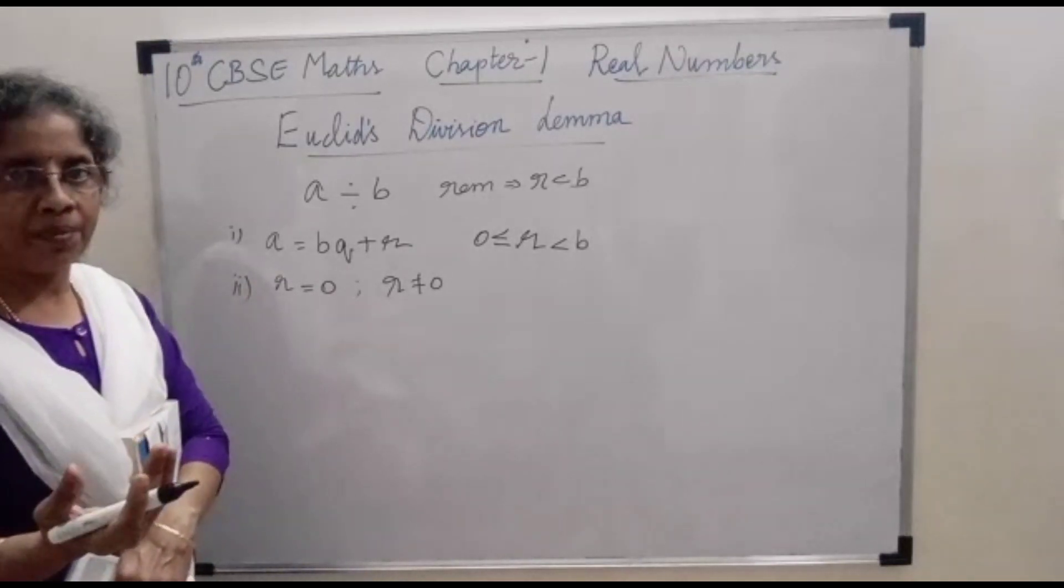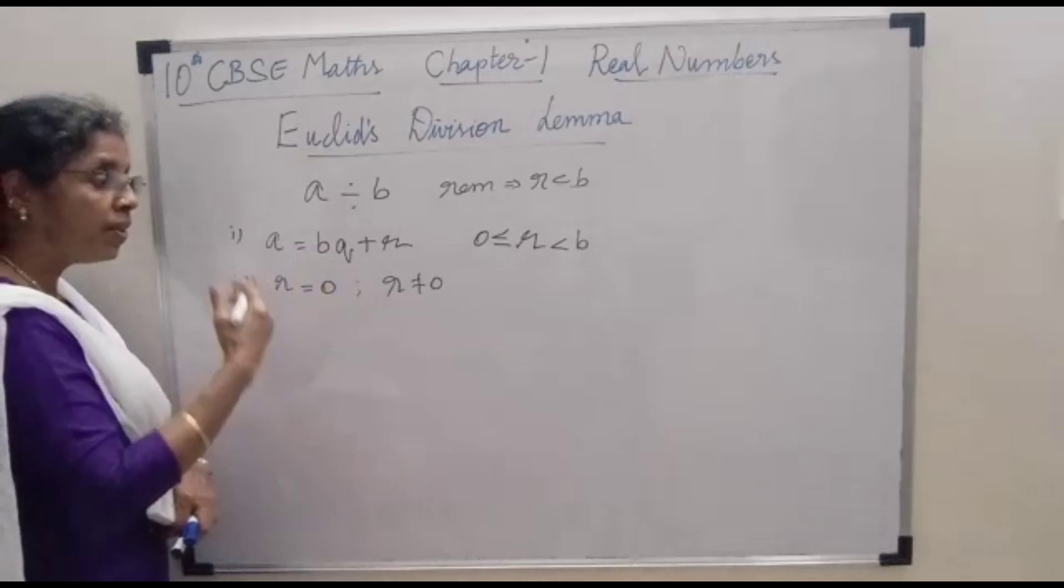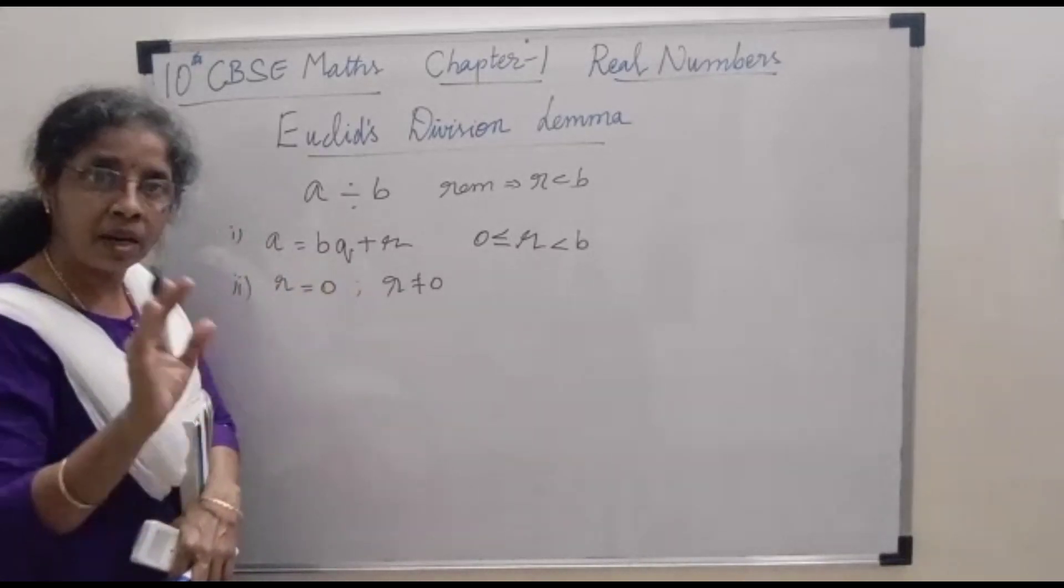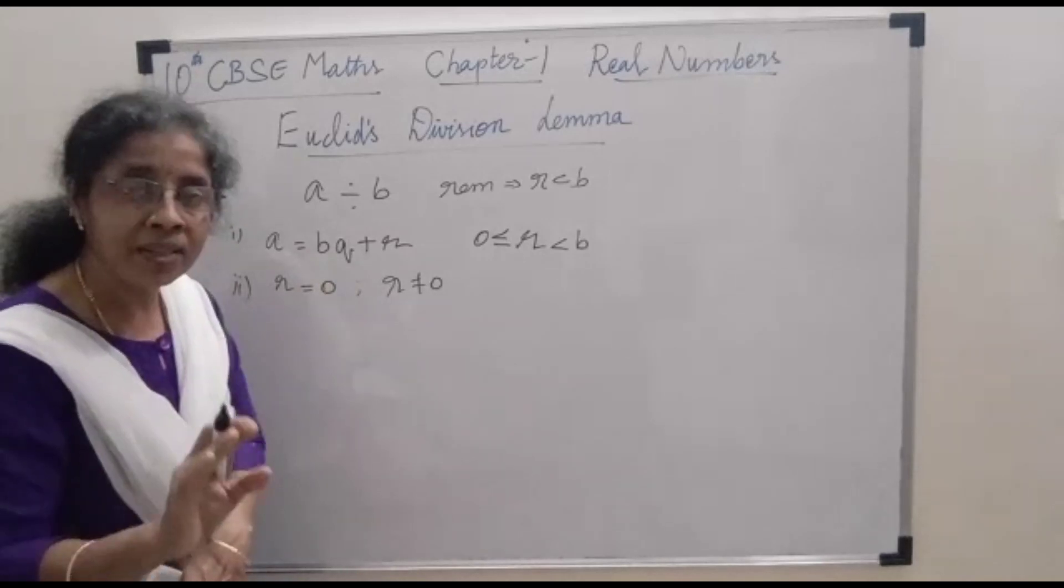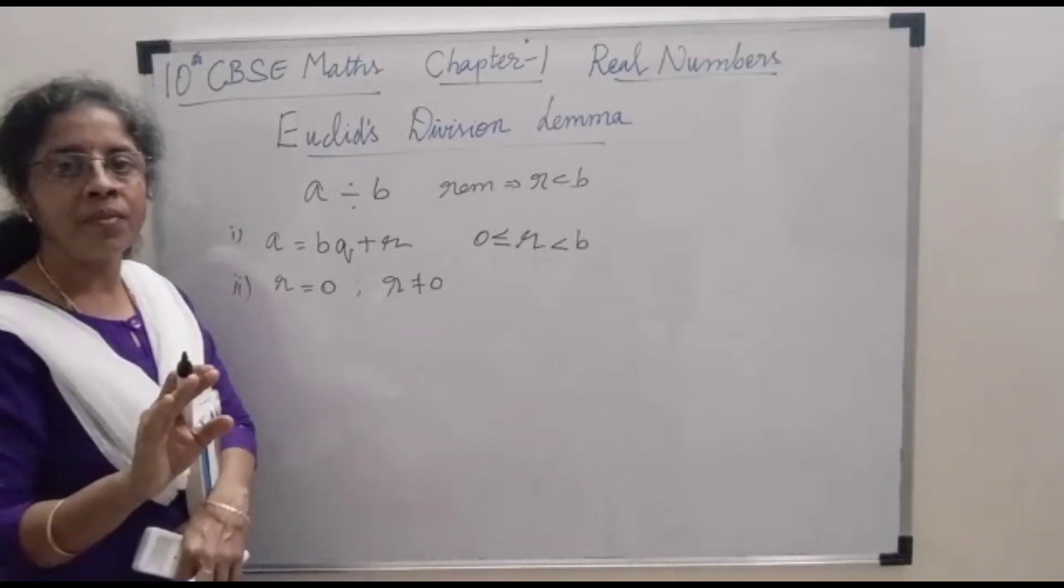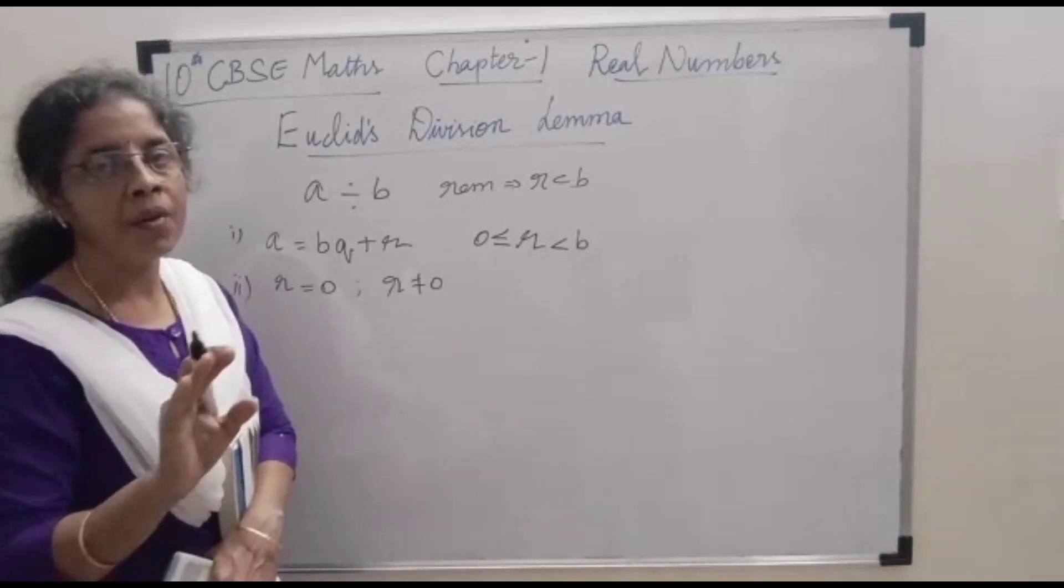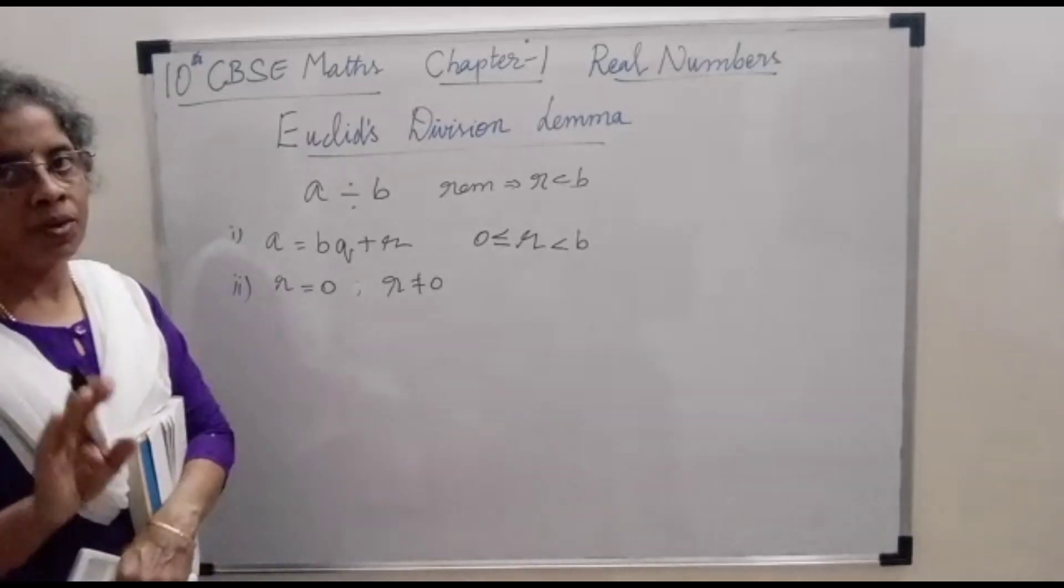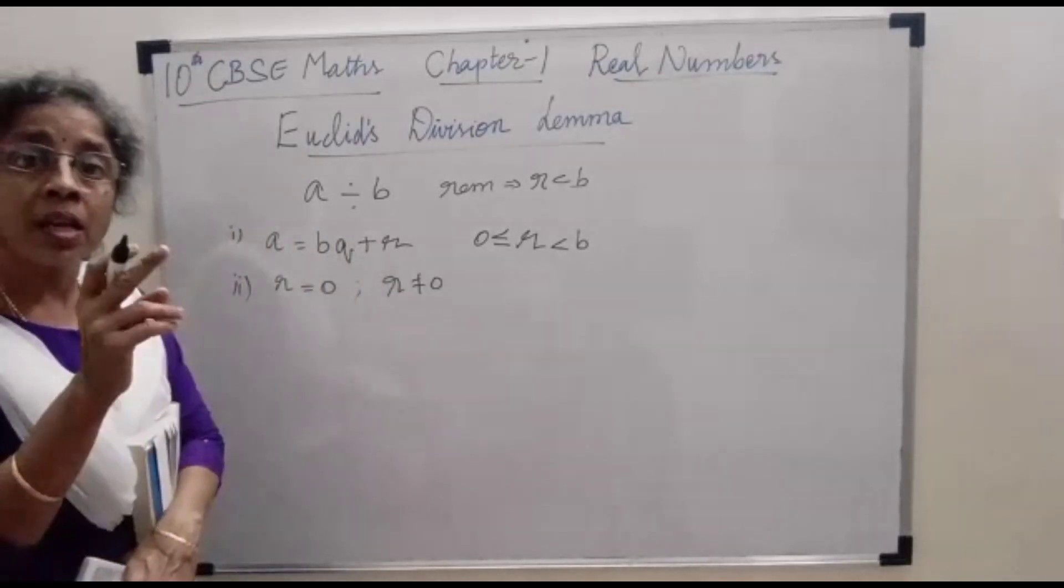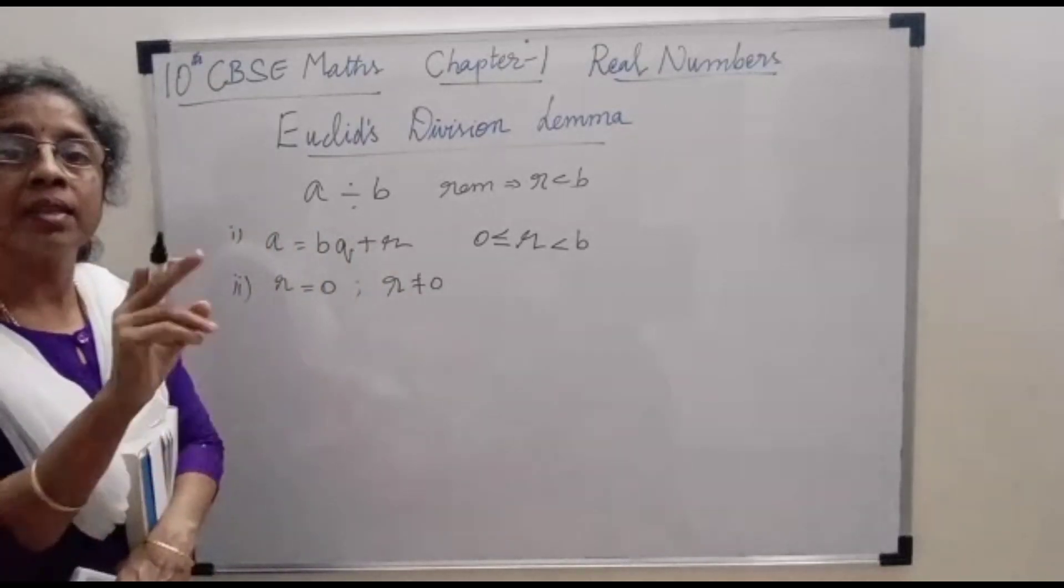The process continues till you get the remainder 0. When remainder 0 comes, the divisor will become the HCF of the given two positive integers. If R is not equal to 0, then R will become the divisor and the divisor will become the dividend.